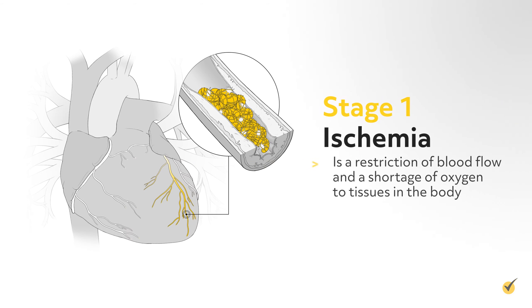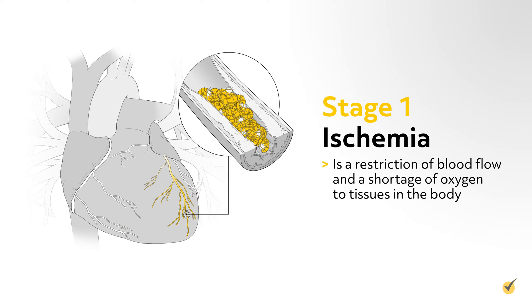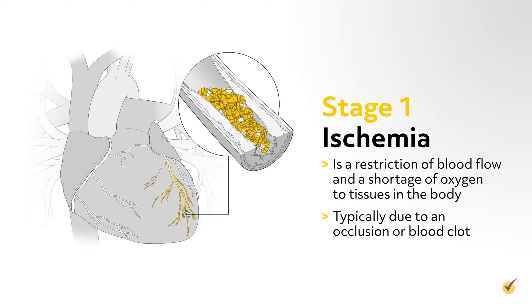Ischemia is a restriction of blood flow, and thus a shortage of oxygen, to tissues in the body. This occurs typically due to an occlusion or blood clot.